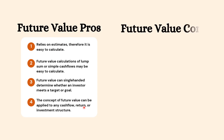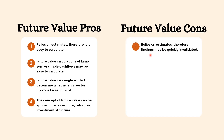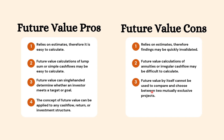Cons of future value: it relies on estimates, therefore findings may be quickly invalidated. Future value calculations of annuities or irregular cash flow may be difficult to calculate. Future value by itself cannot be used to compare and choose between two mutually exclusive projects. Most future value models assume a constant rate of growth, which is often impractical.